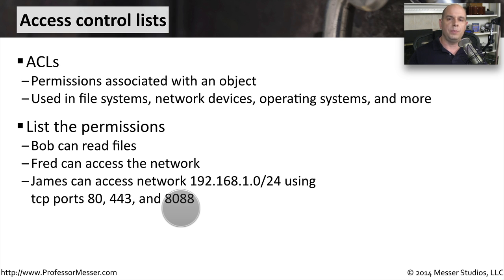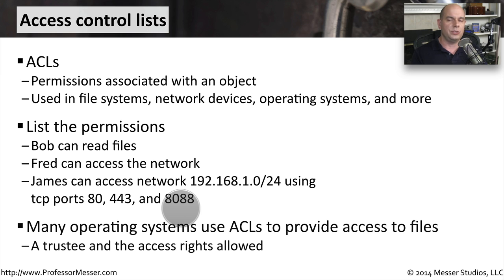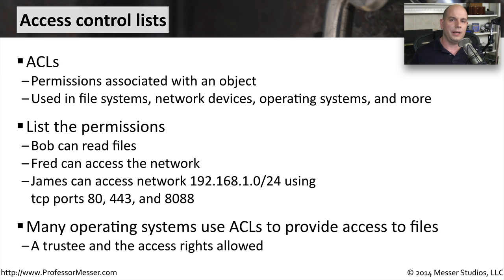You can build very complex ACLs depending on the type of permissions you need for that particular object. Many operating systems use ACLs to allow access to files — these are the rights and permissions assigned to a user or a group. For example, you can allow the marketing group to access advertising information, but restrict that same area to the shipping and receiving department.